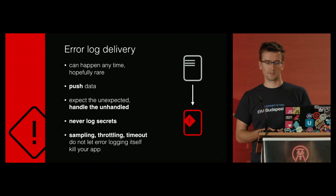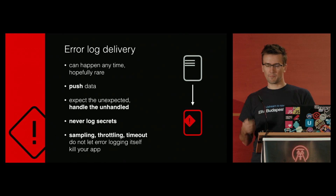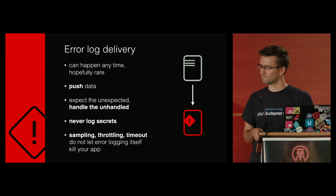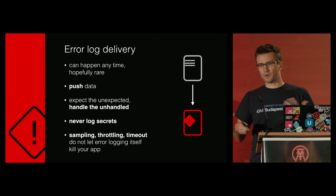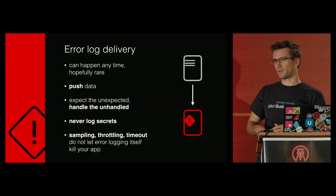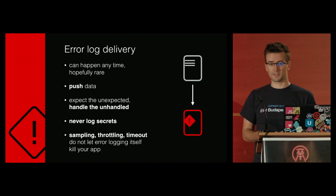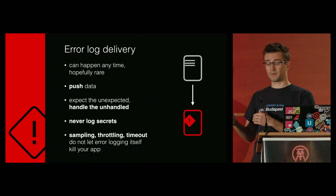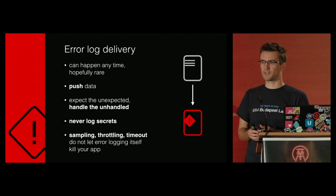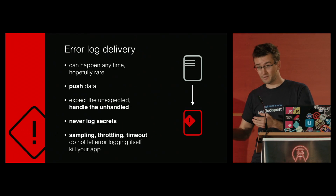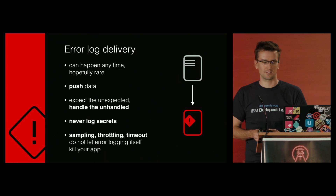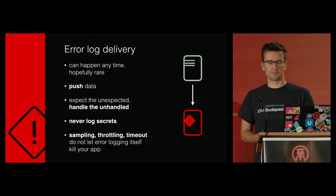Be careful with the logs, because some environment variables may contain secrets, so they can be logged too — that's a bad thing. Implement some sampling, message throttling, or a timeout, because you can easily shoot yourself in the leg. I met a company before who had a service that was working fine, but some little error happened. The service tried to send an error message to the error collecting service, but it couldn't because of a network problem or the error logging service was down. Which created another error, which created another error — basically, it just killed itself. So don't do this.